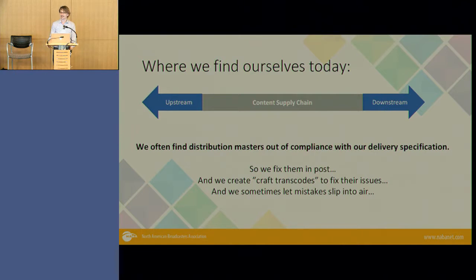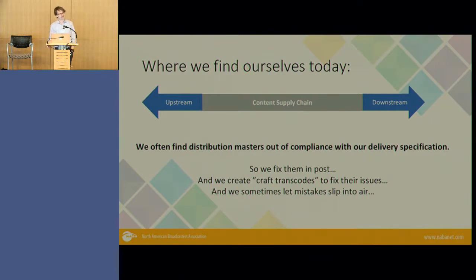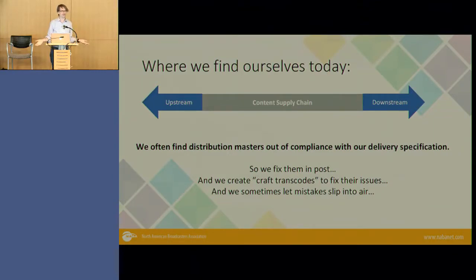Every once in a while those mistakes slip all the way onto air. For example, channels came in reverse, and when we did the stereo mixdown for a TCM movie, we accidentally mixed down the DVS onto the left and right channels. It's not the fault of the person doing the mixdown — it's that the tracks weren't in the right place to begin with. So how do we make sure that doesn't happen?